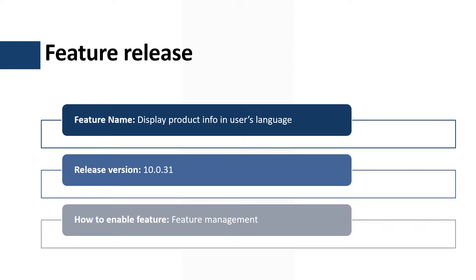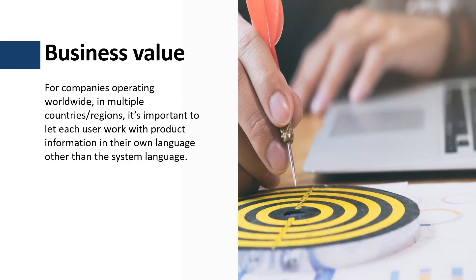This functionality is managed by a feature called 'Display product info in user's language.' This feature is released in application version 10.0.31 and is managed by the feature management workspace. Using this feature, users can see the product's name and description translated into the user's language. For products where no name and/or description are available in the user's language, the system language is used. This will help companies operating worldwide in multiple countries by enabling users to work with product information in their preferred language instead of the system language.